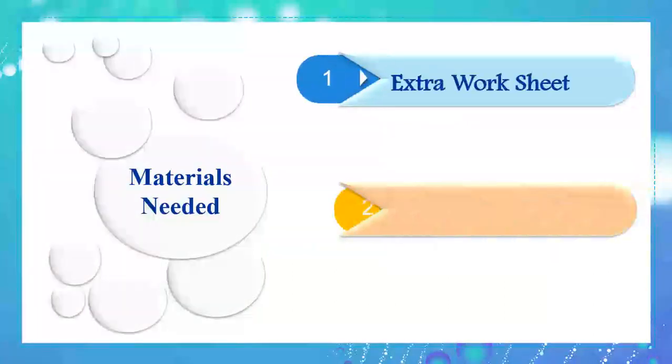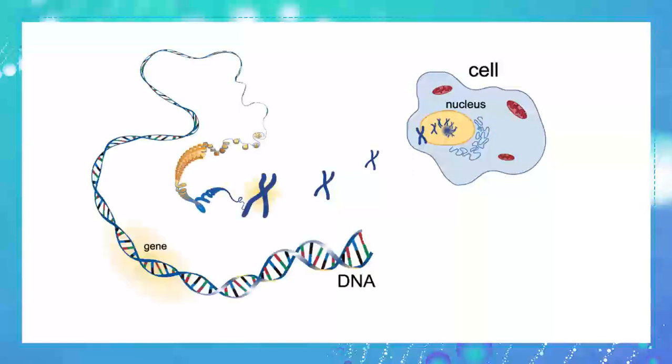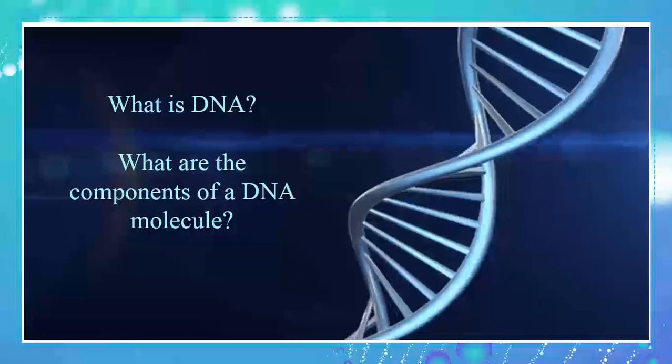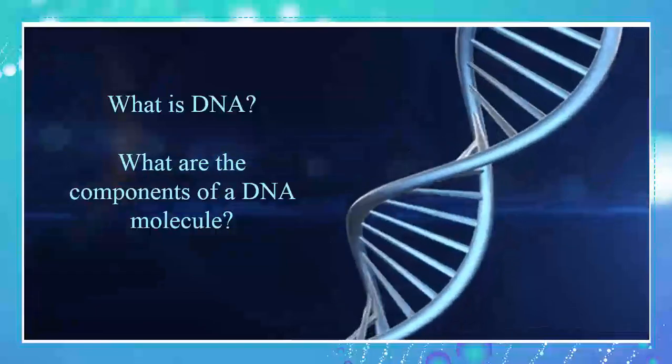Make sure to prepare your extra worksheet and a pencil case. Previously we've learned about the cell that contains chromosomes, and if we look closely into each chromosome we will find DNA. Let's ask some students what they know about DNA. DNA is a long molecule that contains our unique genetic code. DNA identifies the identity of an individual and consists of body cells and germ cells. DNA is found in all our cells and is made up of atoms. DNA is a molecule that carries genetic material responsible for development, functioning, and growth.